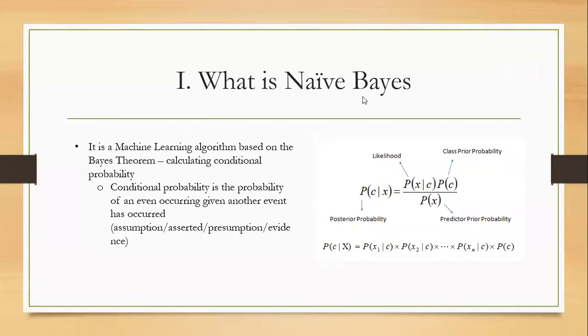So what is Naive Bayes? Naive Bayes is a machine learning algorithm based on Bayes theorem, and this is calculating the conditional probability.